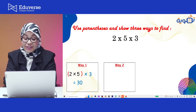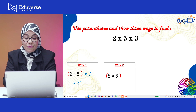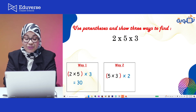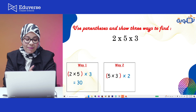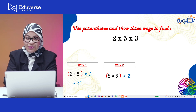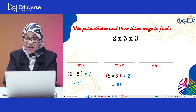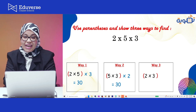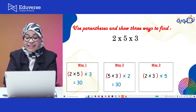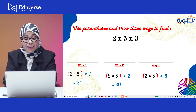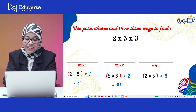Way 2: 5 and 3 inside, and 2 outside. 5 times 3 equals 15, and 15 times 2 equals 30. Good job. Way 3: 2 times 3 inside, and times 5 outside. 2 times 3 equals 6, and 6 times 5 equals 30.